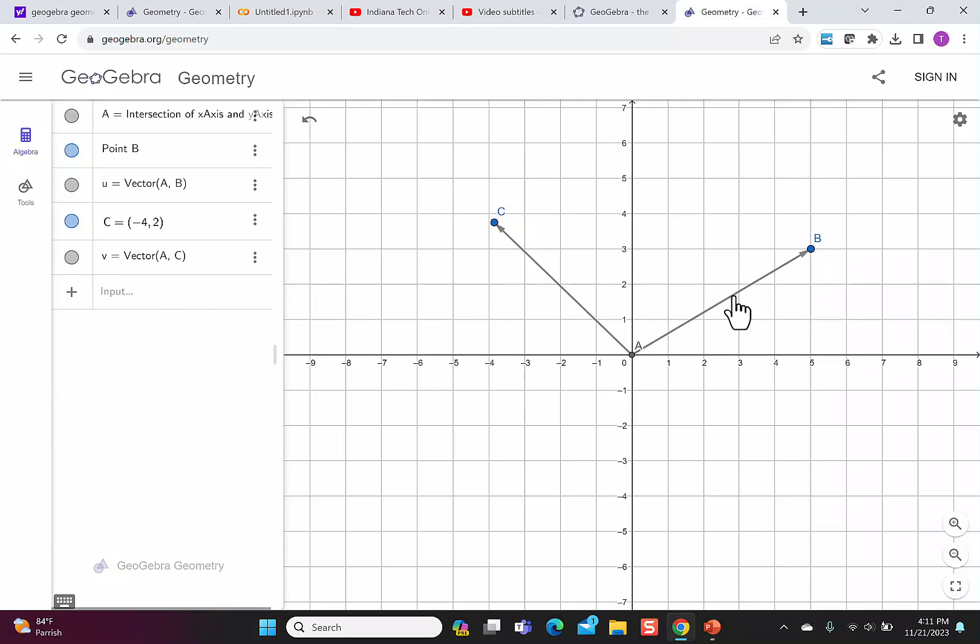Not only did algebra give a name to the point that we used, it also named the vectors. So I have a vector that starts in A, goes to B, that's my vector U, and then I have a vector V that goes from A to C.